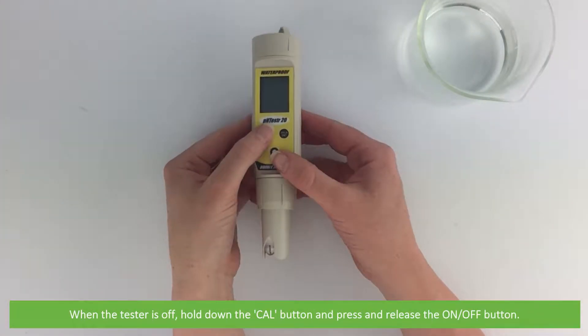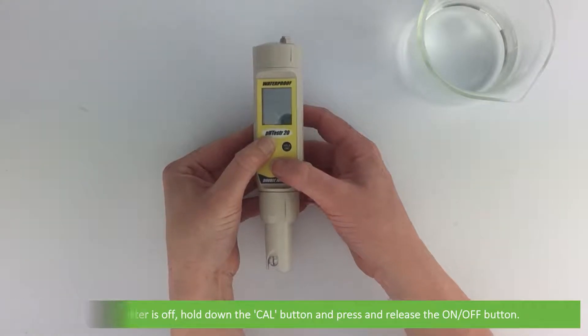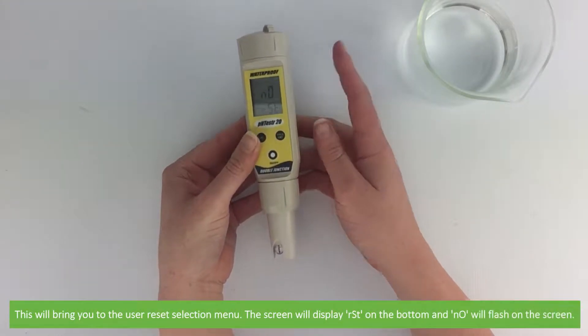When the tester is off, hold down the cal button then press and release the on off button. This will bring you to the user reset selection menu.